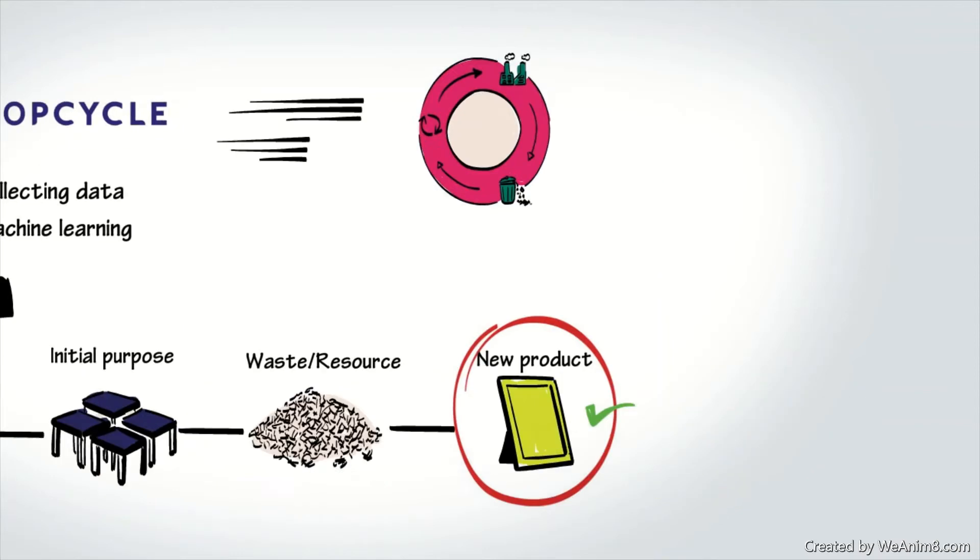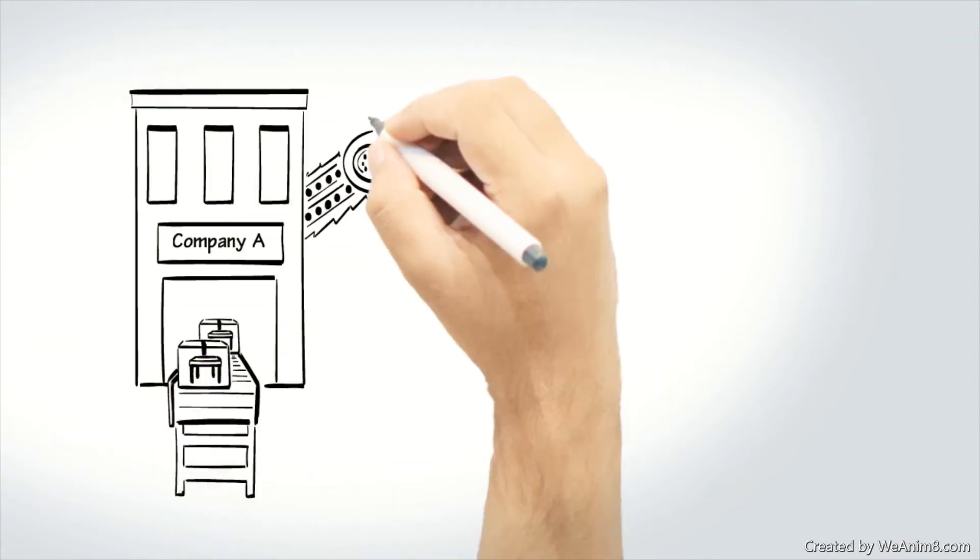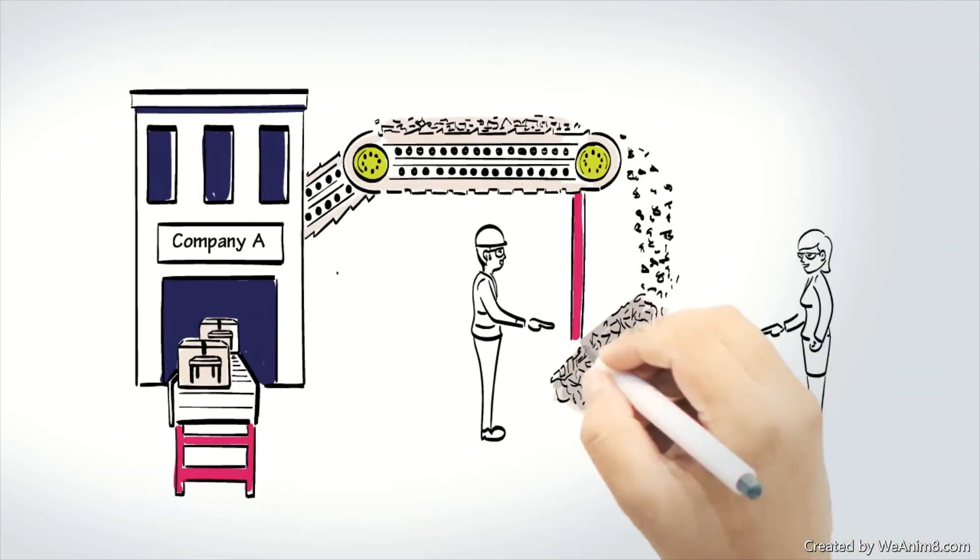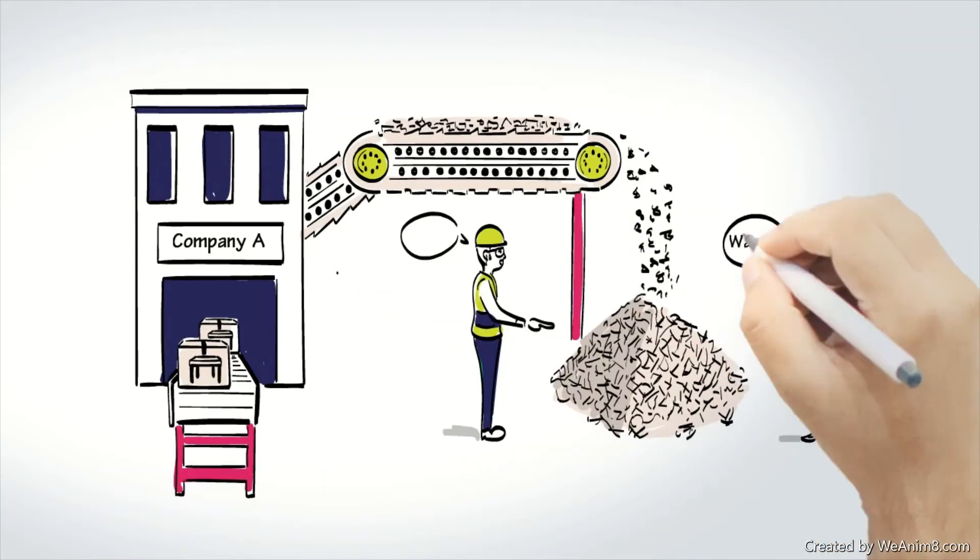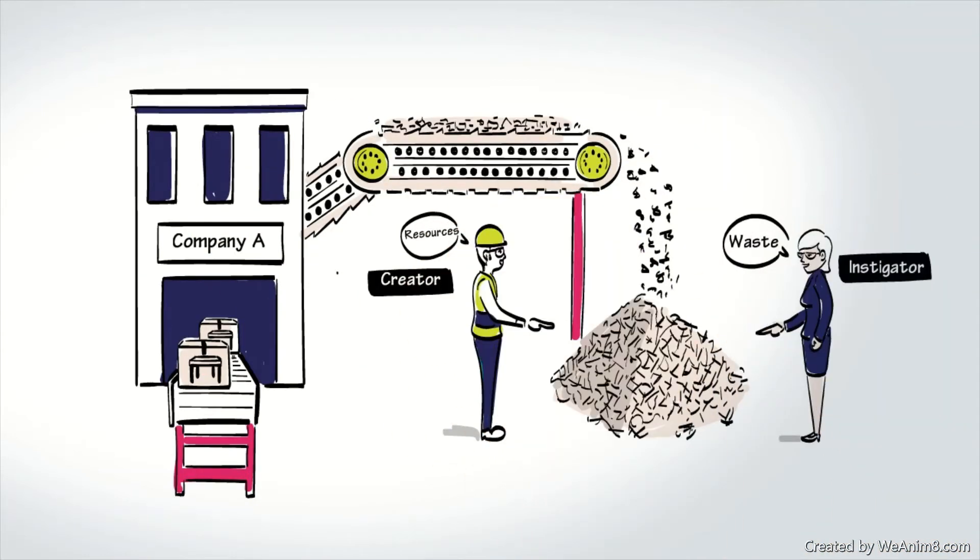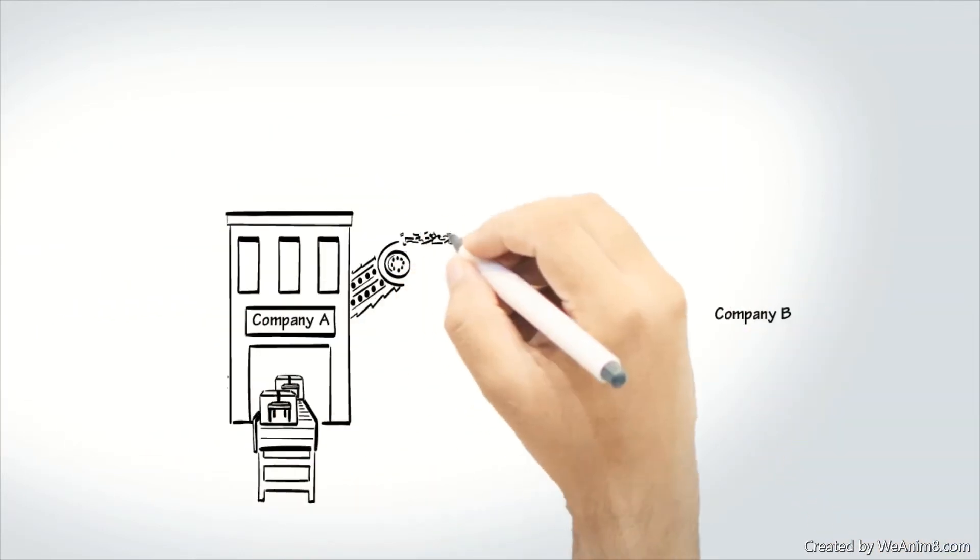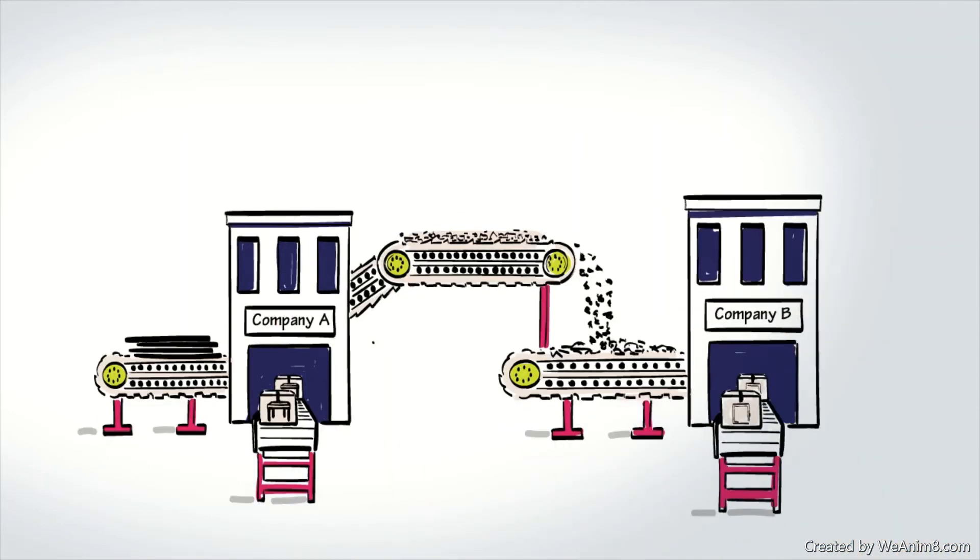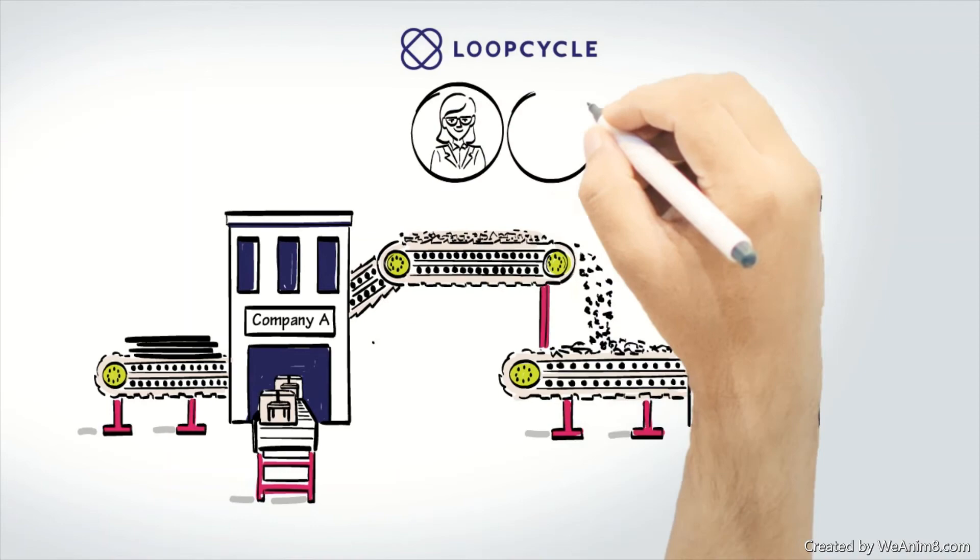Instigators have used resources which would typically be treated through their waste management system. Creators require used resources to create new products. Loop Cycle uses artificial intelligence to pair instigators with creators so that used resources can be directly upcycled to create new products of value.